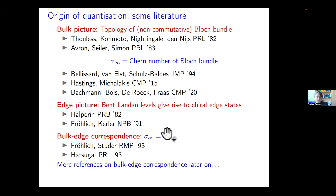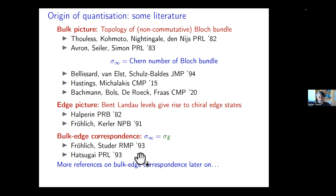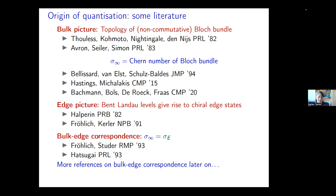The bulk-edge correspondence, which will be the topic of the rest of the talk, was first proved in a concrete microscopic model for non-interacting particles — essentially the discrete Landau operator — by Hatsugai. At the same time, with a completely different approach using minimal assumptions and scaling arguments, Fröhlich and Studer derived effective actions for the bulk and edge systems, also showing the equality of these transport coefficients.